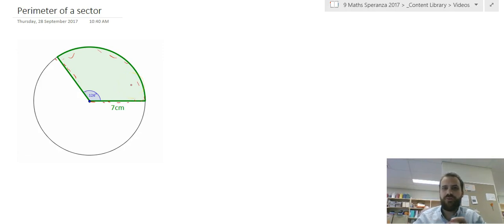You already know how to find the perimeter of a circle, or the circumference of a circle. The perimeter of a circle, or circumference, is equal to pi times the diameter of the circle. Now we don't want to know the circumference of the whole circle, we only want to know this bit here, and this bit, and this bit.